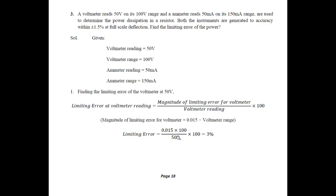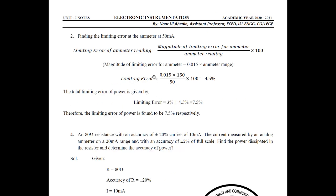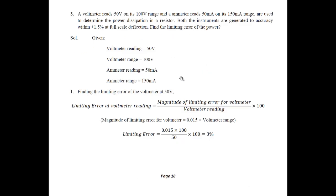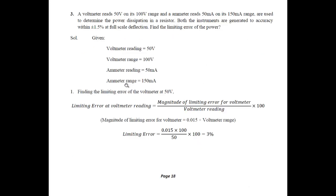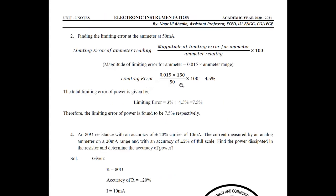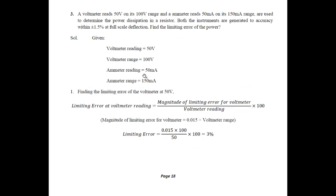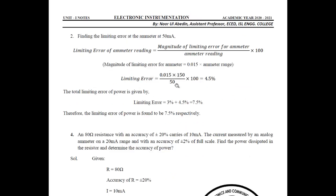Now we find the limiting error for the ammeter similarly. The magnitude is 0.015 multiplied by the ammeter range (150), divided by the ammeter reading (50), into 100. So the limiting error for the ammeter is 4.5 percent.